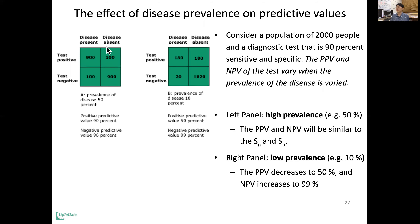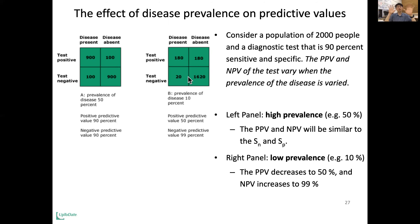Let's consider two scenarios, both with a population of 2,000. In the first case, 1,000 have the disease and 1,000 do not — that's a prevalence of 50%. In the second case, the disease is rarer: 200 out of 2,000 have the disease, so 10% have the disease and the other 90% do not. That gives a prevalence of 10%.